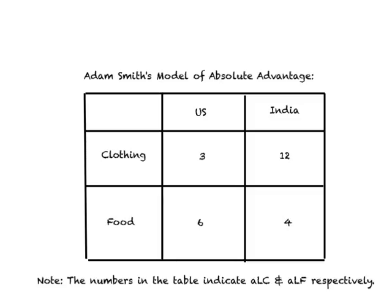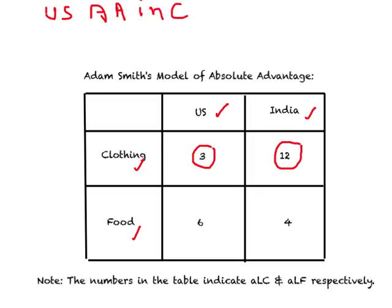To understand Adam Smith's model of absolute advantage, consider a simple table. We have two countries, the US and India, and each produces two goods: clothing and food. The only factor of production required is labor. In the US you require three hours of labor time to produce one unit of clothing, and in India you require 12 hours. According to Adam Smith, the US has an absolute advantage in production of clothing over India.